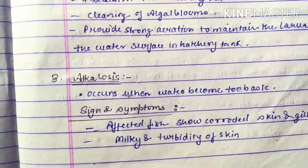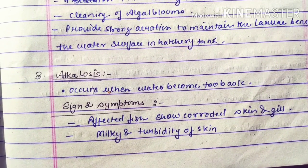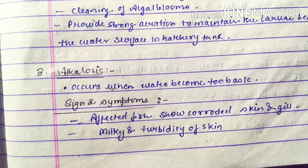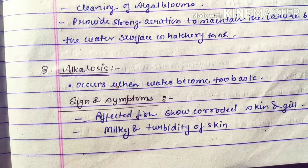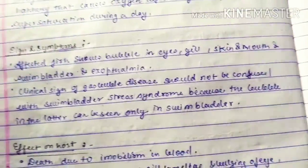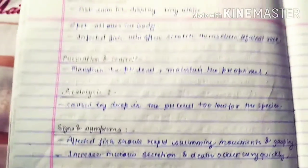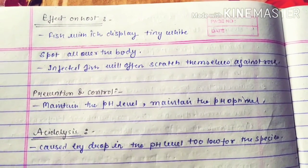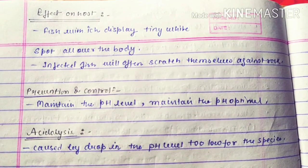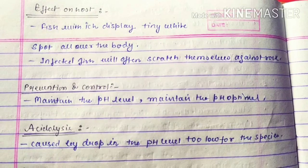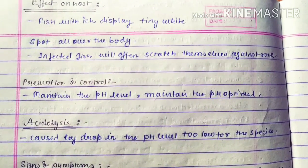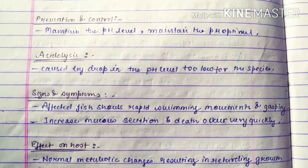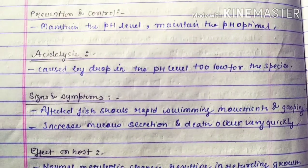The next disease is alkalosis, which occurs when water becomes too basic. Signs and symptoms include corroded skin and gills, and milky turbidity of the skin. Due to high basic conditions, effects on the host include fish displaying tiny white spots all over the body, and infected fish will often scratch themselves against rocks. Prevention and control: maintain the pH at the optimum level.